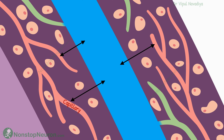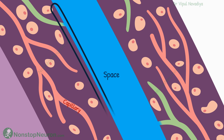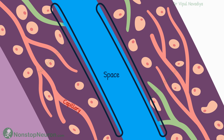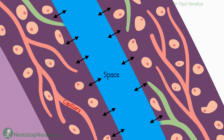Now let's talk about the fluid exchange between the capillaries and these spaces. The surface of tissue surrounding these spaces does not provide much resistance to the passage of fluid, electrolytes, and even large proteins, so they all flow freely between the space and the surrounding tissue. It's like these spaces are just a continuation of the surrounding tissue interstitium, so the exchange with capillaries happens very smoothly via this interstitium.